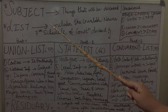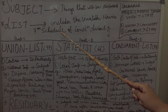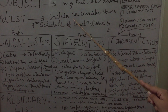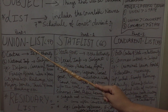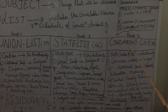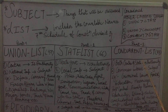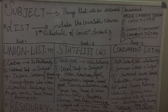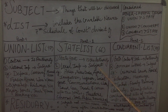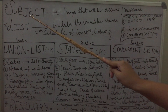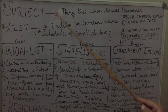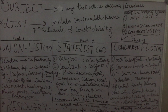Savidhan mein, 7th schedule ke andar, 3 lists ka zikr hua hai. Ek pehle part ke andar hum baat karte hain union list ki, state list ki aur concurrent list ki. Usse pehle hum in sari lists ko samjhein. I need to explain the meaning of subject and list, so that the idea is very clear to you guys.